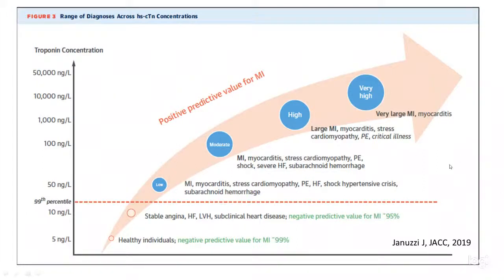Someone asked about patients with renal failure and high creatinine — that can also be a cause of elevated troponins. You may see troponin levels around 100 to 1,000 with kidney failure. With kidney failure patients, your troponin levels could be between 100 and 1,000.